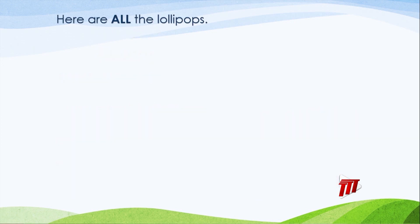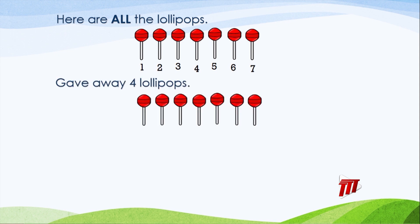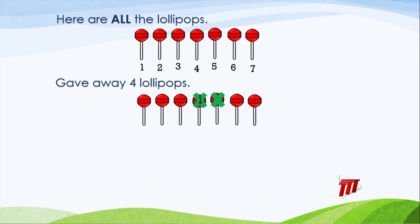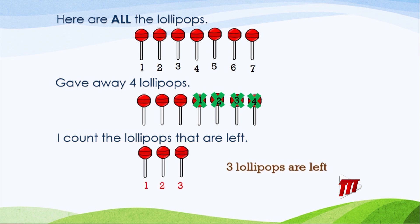Here are all my lollipops — one, two, three, four, five, six, seven. Sarah gave away four lollipops — one, two, three, four. How much is she left with? I count the lollipops that are left — one, two, three. Three lollipops are left. Seven take away four equals three.